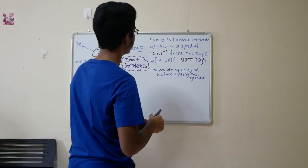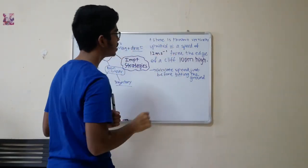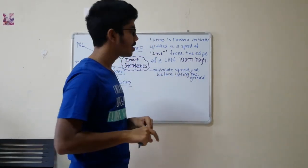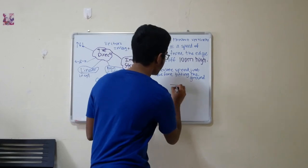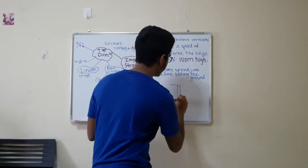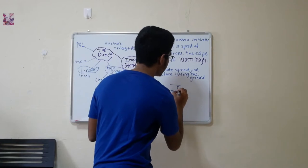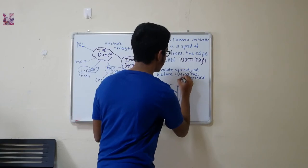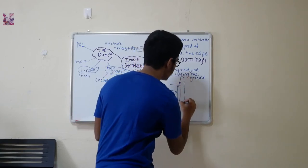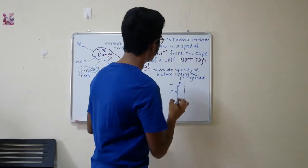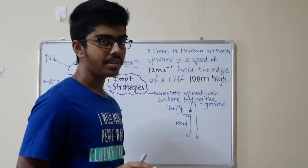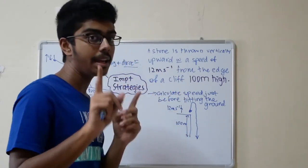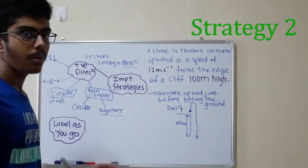Alright guys, we'll be doing an example question, just a very small part, to highlight the important concept under this. Here I have the question on the right side of the board. A stone is thrown vertically upward, with a speed of 12 meters per second, from the edge of a cliff 100 meters high. Let's draw a visual diagram of what is happening. We have a cliff, and that cliff is 100 meters high. And we have a guy, some random dude, throwing a stone vertically upwards. And then it falls down all the way to the floor. It's released with a speed of 12 meters per second. Now first, what is this and this? An important strategy that you guys should practice from now on, is to label as you go.